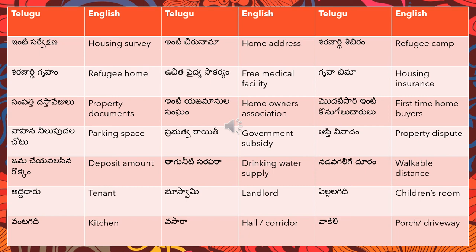'As the vivaadho' means property dispute — 'vivaadho' means dispute. 'Jama chai valisi na rukkho' means deposit amount — 'jama' means deposit and 'rukkho' means amount.